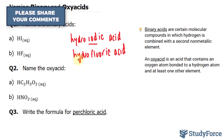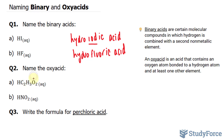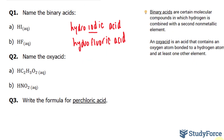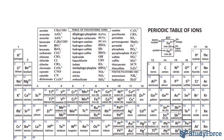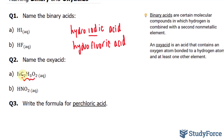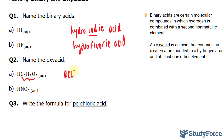In question two, they want us to name the oxy acid HC2H3O2. This is composed of hydrogen and a polyatomic ion — acetate. According to our periodic table, acetate has the formula CH3COO with a negative charge, and similarly we have two C's, three H's, and two O's. The oxyanion here is acetate, and therefore the name of the acid is acetic acid.